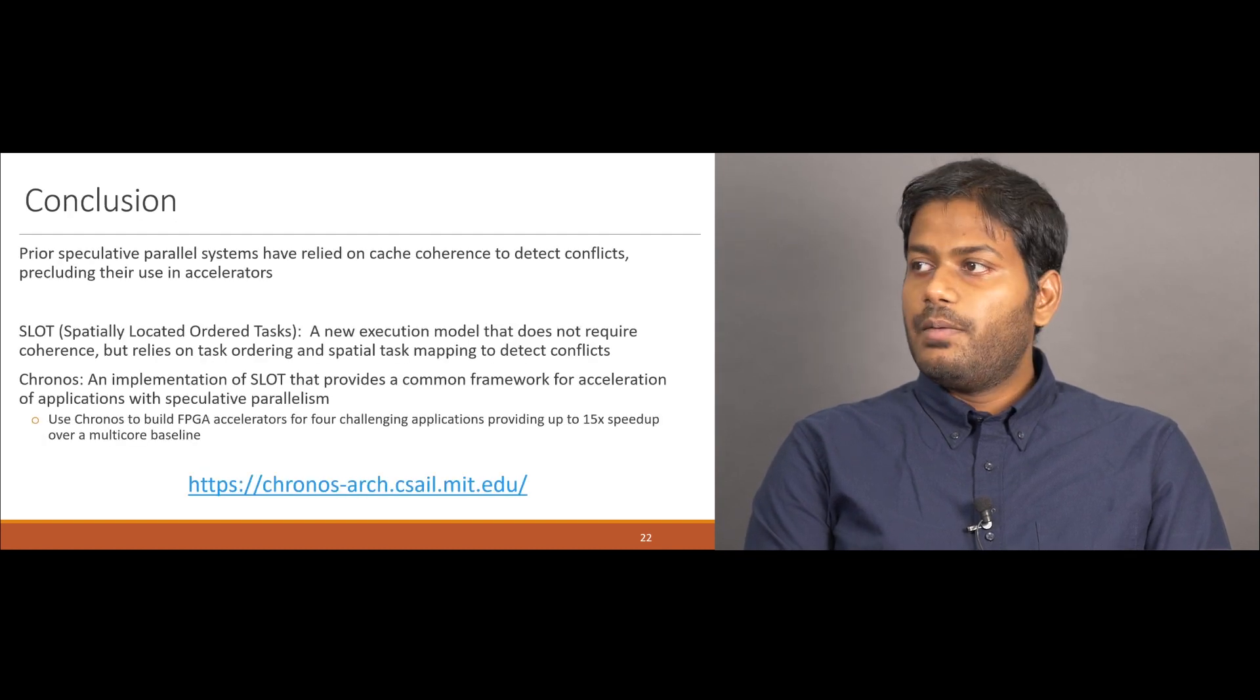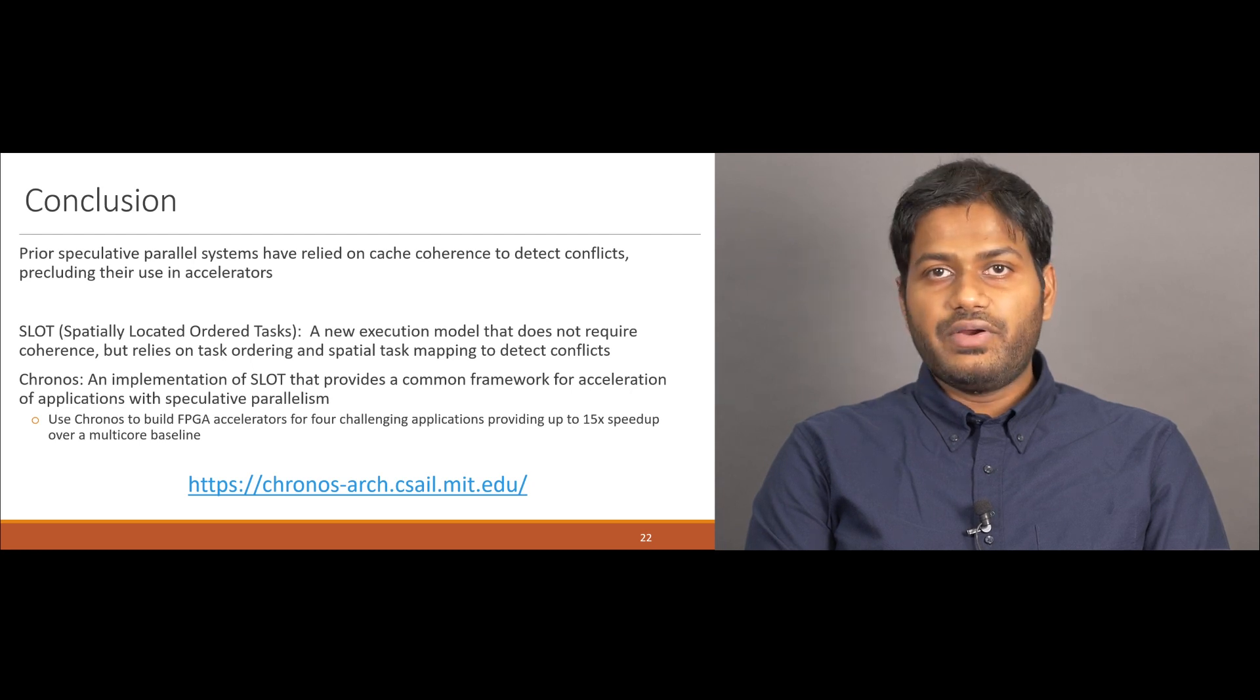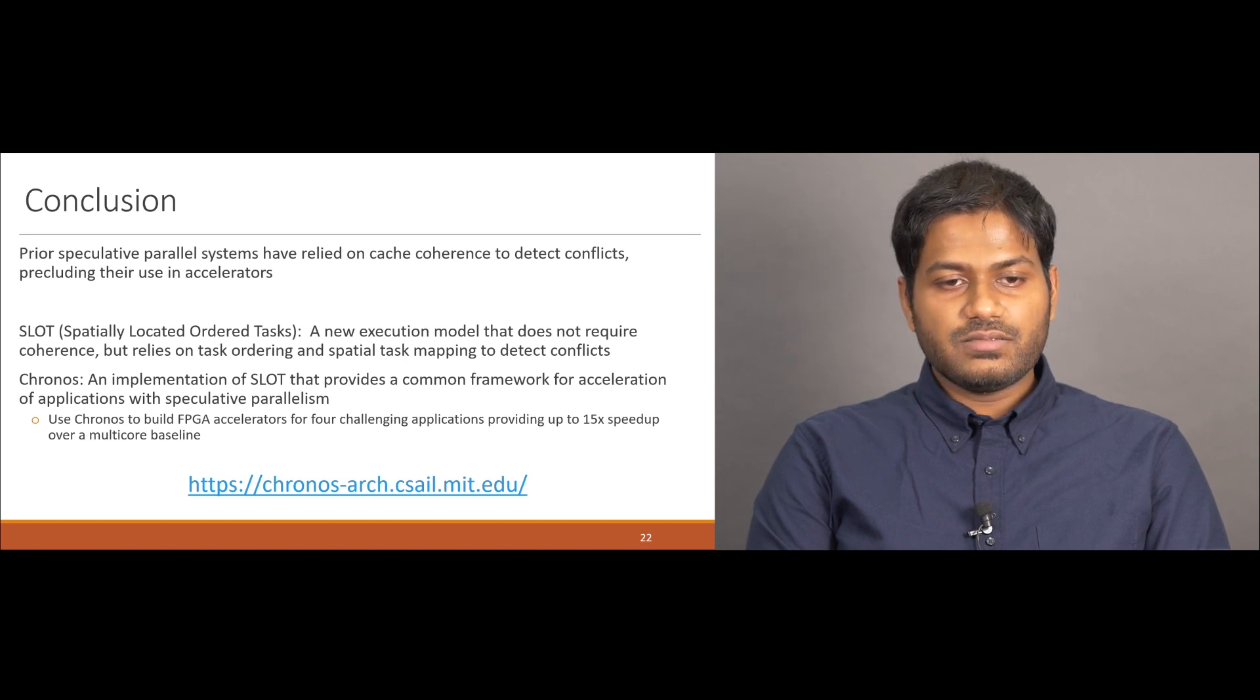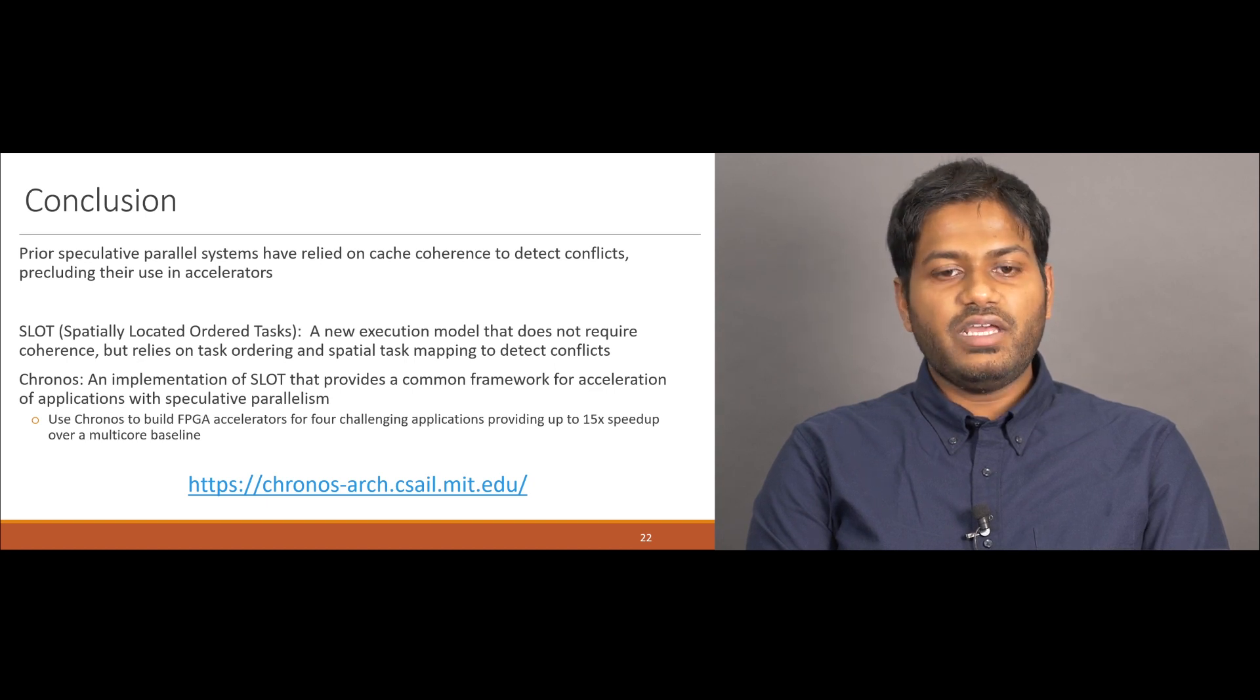In conclusion, prior speculative parallel systems have relied on cache coherence to detect conflicts, hindering their use in accelerators. In this work, we propose two contributions. SLOT is a new execution model that does not require coherence, but relies on task mapping and special task ordering to detect conflicts. Kronos is an implementation of SLOT that provides a common framework for acceleration of applications with speculative parallelism. We demonstrate the benefits of Kronos by using it to build FPGA accelerators for four challenging applications with speedups up to 15x. Kronos is available at this link, and we welcome you to check it out and provide feedback. Thank you.